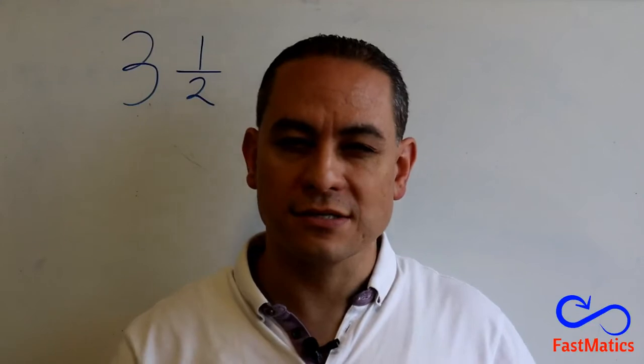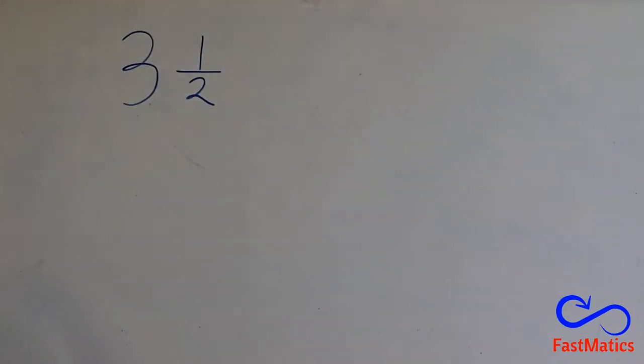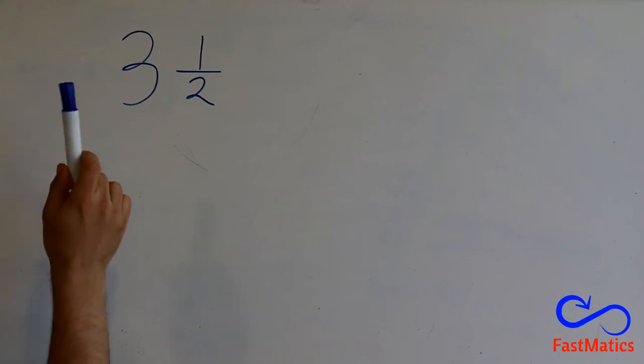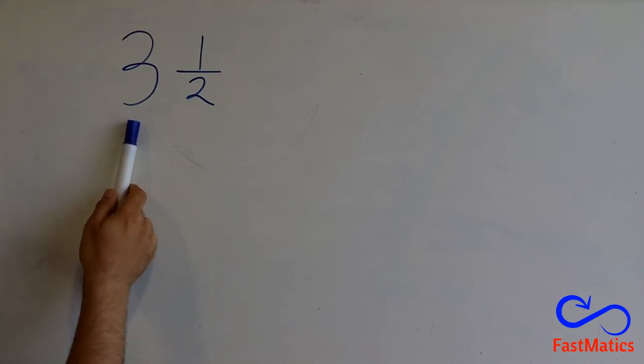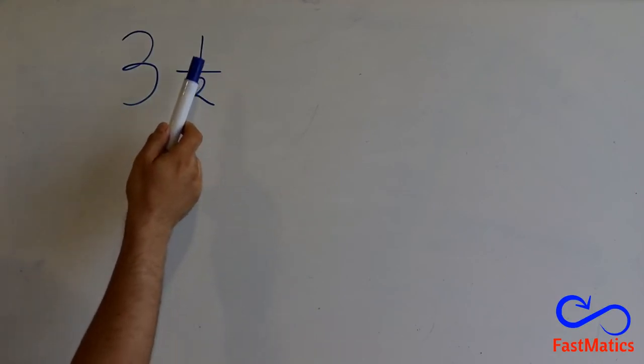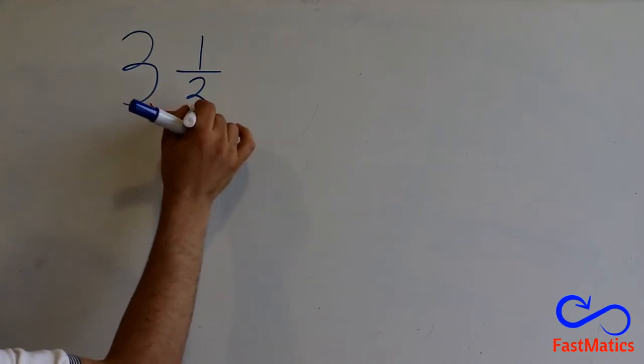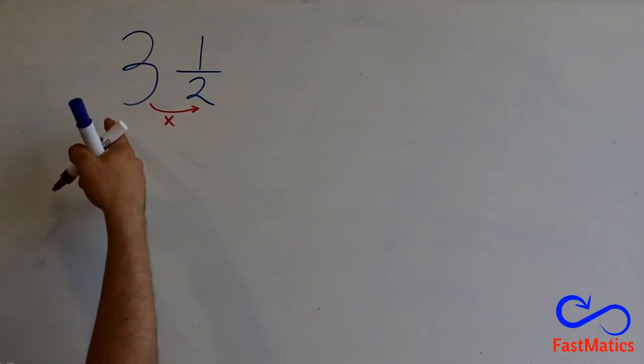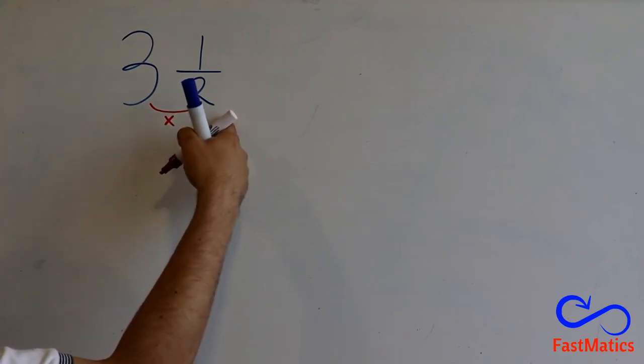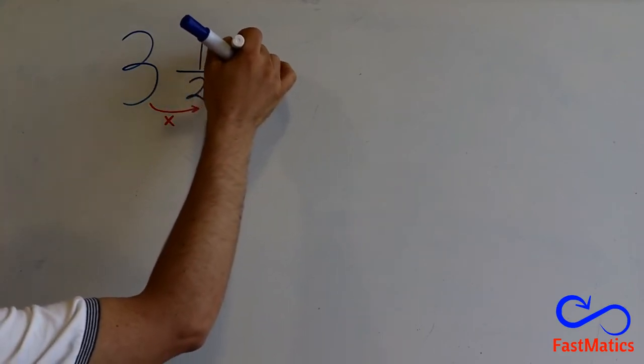Let's see one example. Here we have 3 and 1 over 2. How to convert it to an improper fraction? First of all, we have to multiply the whole number by the denominator and add the numerator.